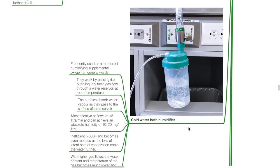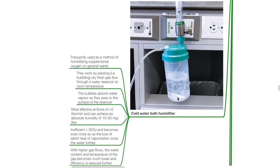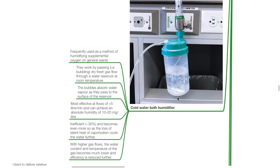The cold water bath humidifier is frequently used as a method of humidifying supplemental oxygen in general wards. It works by passing or bubbling dry fresh gas flow through a water reservoir at room temperature; the bubbles absorb water vapor as they pass to the surface. It is most effective at flows of less than 5 L/min and can achieve an absolute humidity of 10–20 mg/L. It is inefficient and becomes more so as the loss of latent heat of vaporization cools the water further. With higher gas flows, water content and temperature of the gas become much lower and efficiency is reduced further.